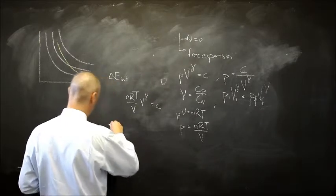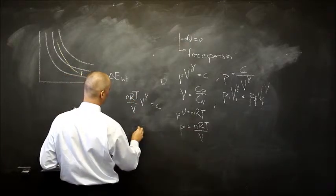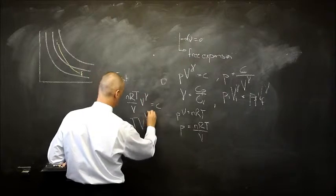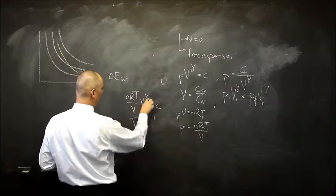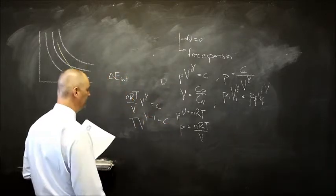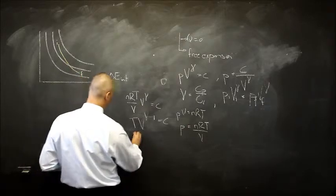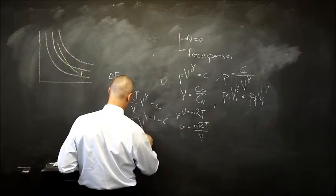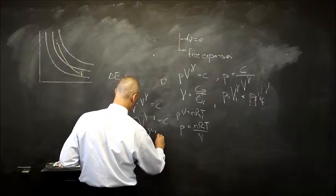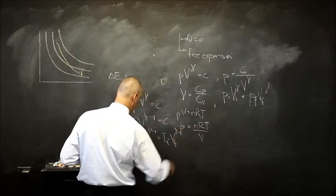And since n is going to be a constant - if I go from some initial to final state, n is a constant, R is a constant - I actually get that TV to the power gamma minus one, so I'm just bringing this up, it's going to equal n times R, which still remains the same constant. And then finally, if I go from some initial to final state: temperature initial V initial to the power gamma minus one is going to equal temperature final V final to the power gamma minus one.